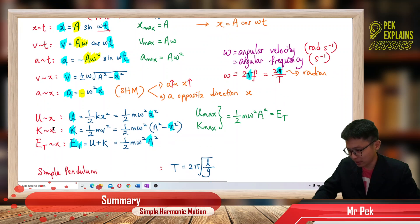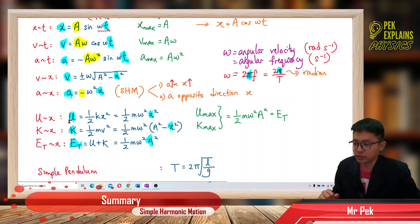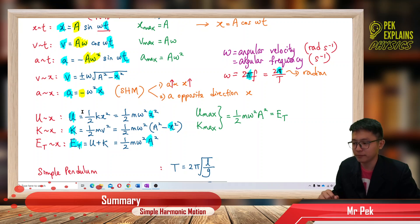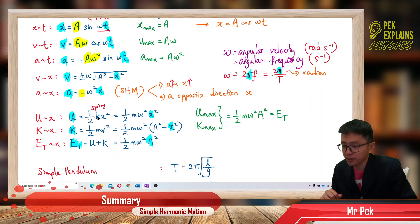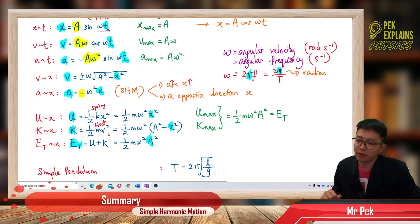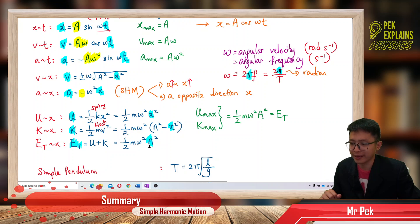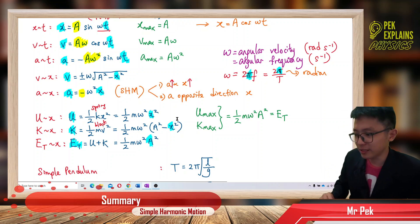Next, we talk about energy. The potential energy stored in the spring versus displacement is U = ½kx² = ½mω²x². The kinetic energy of the oscillating block is KE = ½mv² = ½mω²(A² − x²). Both reach the same maximum, which equals the total energy: E = ½mω²A². Total energy equals U plus KE.